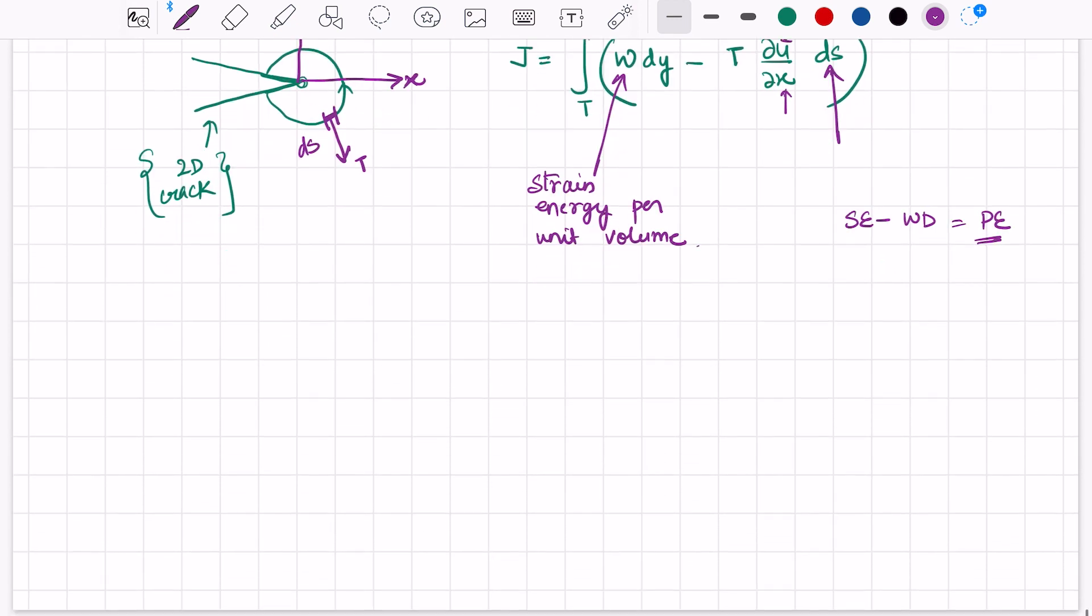Basically, we can determine J-integral by taking the difference of potential energy between two specimens. Let's consider if this is the first specimen and this is the second specimen. Both specimens are identically loaded. The only variation is they have slightly different crack lengths. If this is a and a-dash, a-dash is slightly more than a. The potential energy difference between the two specimens is what is J-integral: tau U by tau a for a unit thickness specimen.